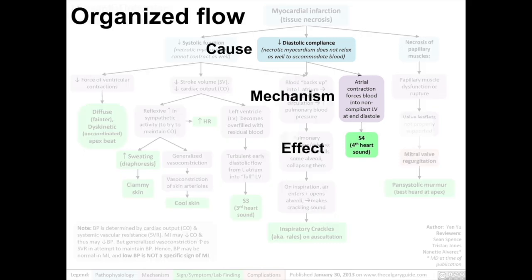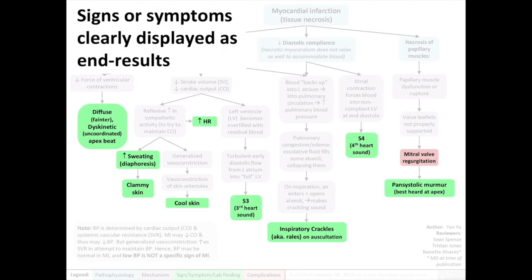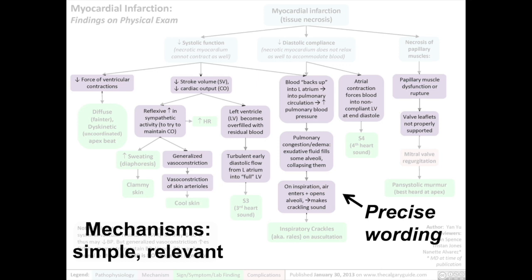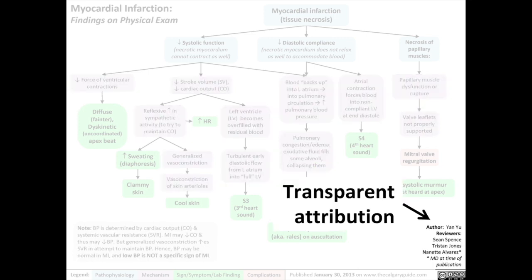Here are some basic themes regarding every single slide you'll see. You'll see an organized flow with a pathophysiologic cause, a mechanism that stems from the cause, and an effect that stems from the mechanism, so that every single sign, symptom, or lab finding is explained by a purple box mechanism. We present signs, symptoms, or complications of disease as clearly displayed end results of the flowchart. We have a color-coded legend to help the learner understand where they are on the flowchart. And perhaps one of the trade secrets of the Calgary Guide is that we have very precise wording — we agonize over the wording used in the mechanisms. We also have transparent attributions so that every author and reviewer is fully credited.